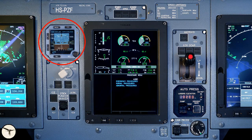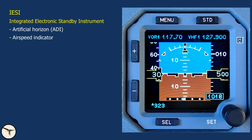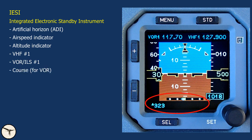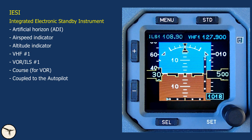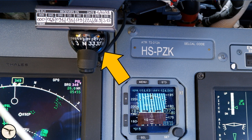This is the standby instrument, called the IESI, the Integrated Electronic Standby Instrument. It has the following functions: artificial horizon, airspeed indicator, altitude indicator, VHF radio number 1, VOR/ILS number 1, and course selector for the VOR. The IESI can be coupled to the autopilot and can fly an ILS. For heading indication, however, we rely on the old-fashioned magnetic compass, which folds out of the glareshield.